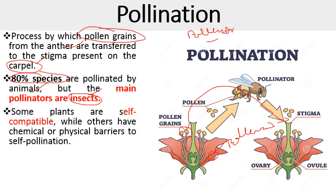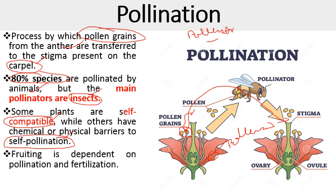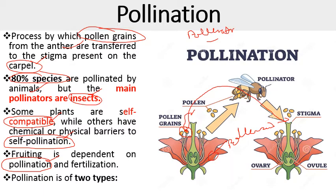Some plants are self-compatible, meaning they show self-pollination — they transfer pollen to the stigma of the same flower. While others have chemical or physical barriers which avoid self-pollination, giving cross-pollination instead. Fruiting is dependent on the pollination and fertilization process.